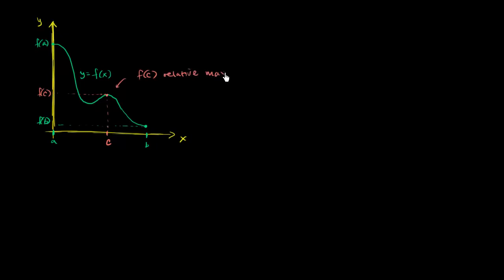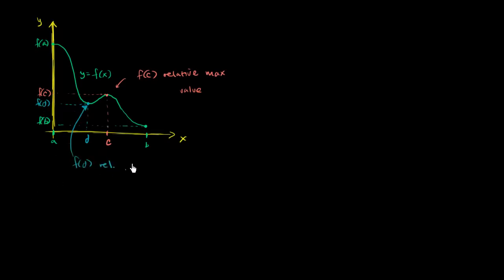We're saying relative maximum because the function obviously takes on other values that are larger than it. But for the x values near c, f of c is larger than all of those. Similarly, if this point right over here is d, f of d is a relative minimum point, or relative minimum value — also called a local minimum value.